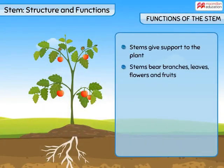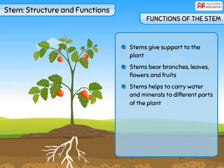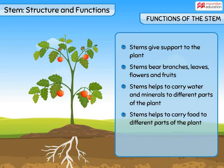Apart from giving support and bearing branches, leaves, flowers, and fruits, one very important function of the stem is to carry water and minerals absorbed by the roots to different parts of the plant. Thin tube-like structures inside the stem help to carry water from one place to another.